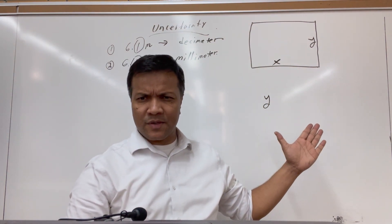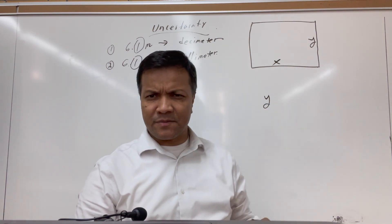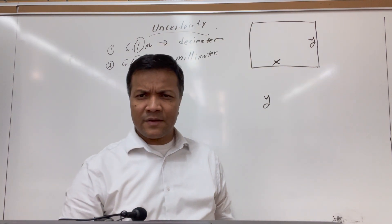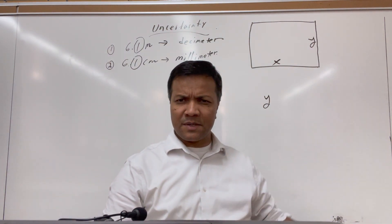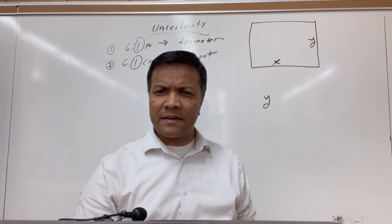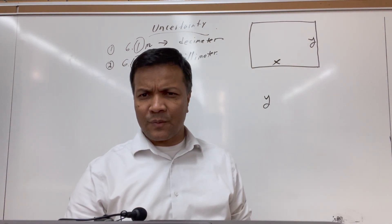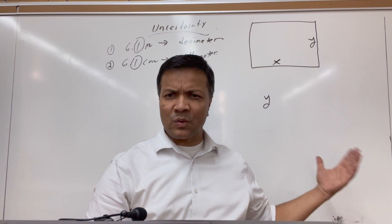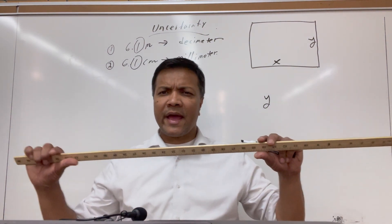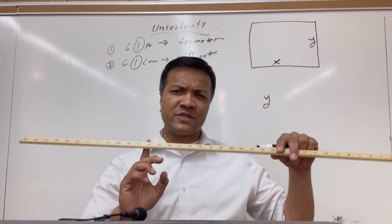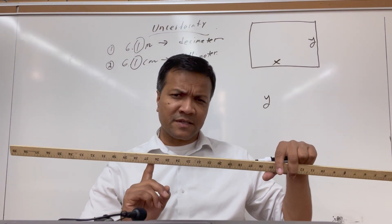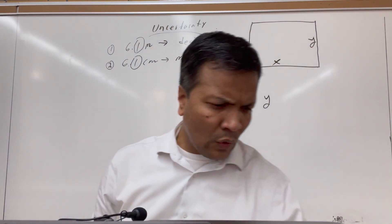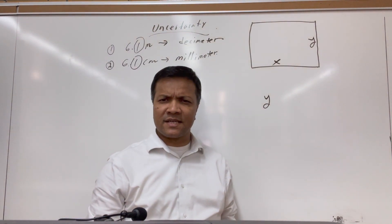But if I ask everyone to go beyond the centimeter — to go to the millimeter — then different people will have different answers. And if I ask people to go beyond the millimeter to a smaller unit, then 30 people will have 30 different answers. Why is that? It's because we don't have access to that much precision. Our eye can only see down to the millimeter. If you want to be more precise than a millimeter, then you have to do estimation. This is why we are trying to understand uncertainty.